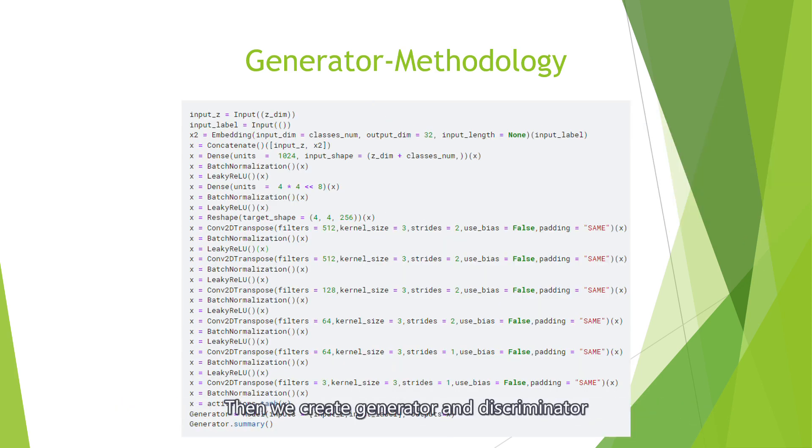Then we create the generator and discriminator. The model consists of a series of layers, including dense layers, batch normalization layers, and convolutional transpose layers. The output of the model is an image with dimensions of 64 times 64 times 3, and the values in the range of 1 to negative 1.